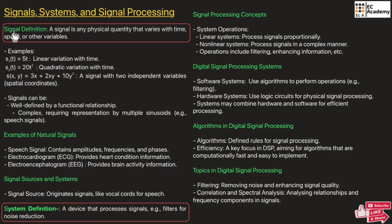A signal can also be defined as a dependent variable of one or more independent variables. For example, we have a linear equation S1(t) = φt. This equation varies with respect to time t, where S1 is a dependent variable depending on the independent variable time.